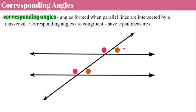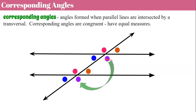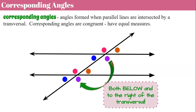Together, non-corresponding adjacent angles would equal 180 degrees, but they are not the same measure. We have two more pairs: blue to blue — below and to the left, below and to the left. And purple to purple — below and to the right of the transversal. So each set of color-matched angles are corresponding angles in corresponding locations.